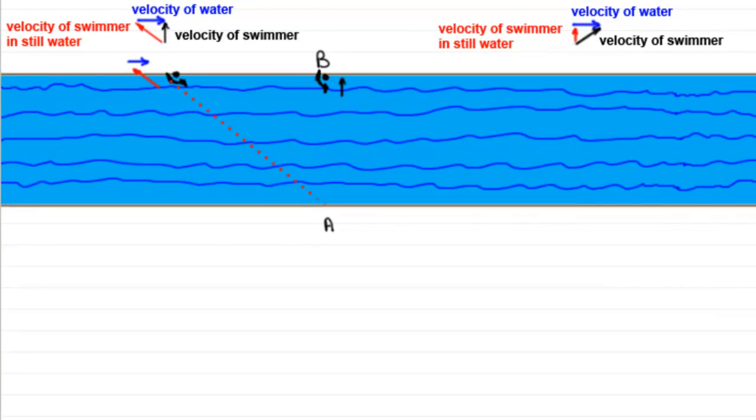Now, let's just do a few calculations. Let's suppose that the swimmer can swim at one meter per second in still water and the river flows at 0.6 meters per second. Then let's work out the velocity of the swimmer in each of these scenarios. And we'll start off with this one here.